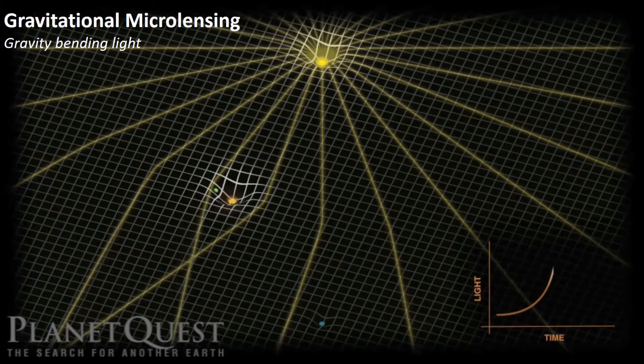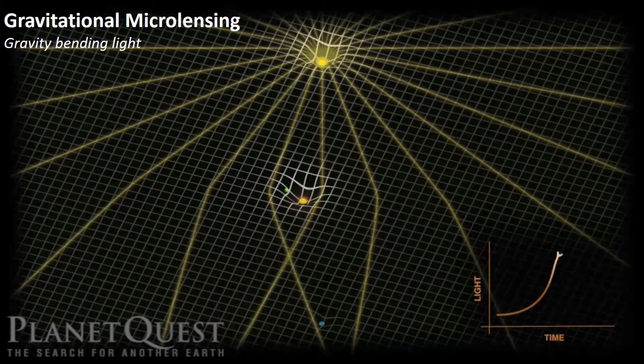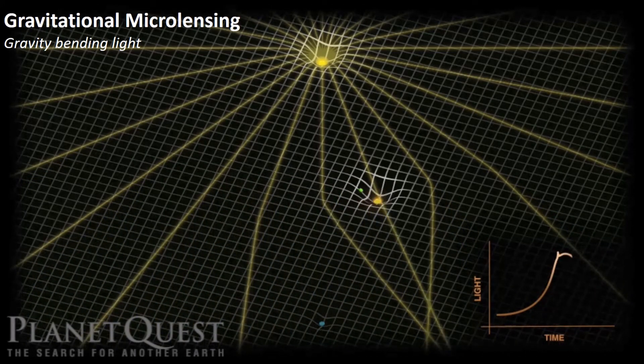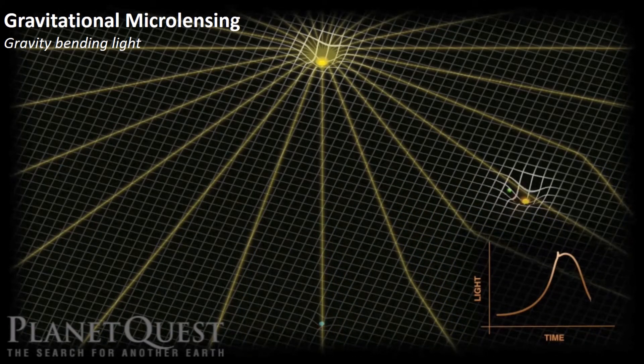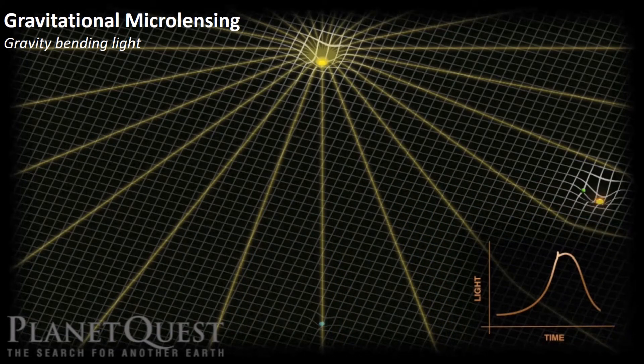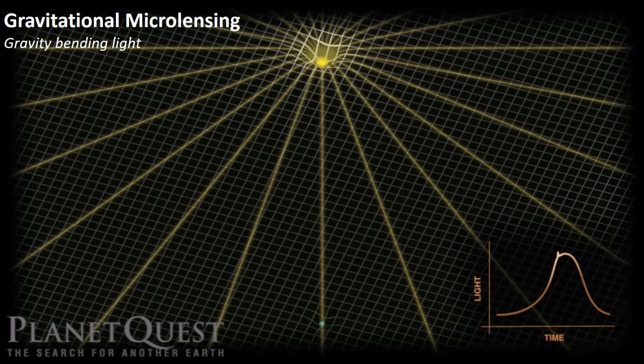So, when a planet is positioned between us and a star, it can focus light from that star, making it appear temporarily brighter. 53 planets have been discovered so far with this method. It is called gravitational microlensing.